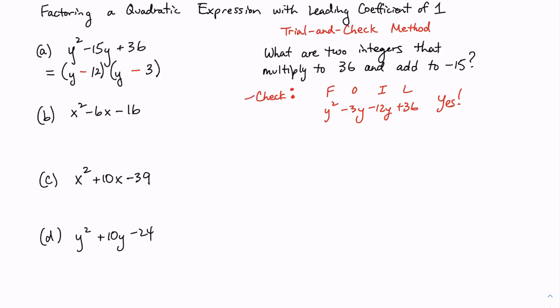When this checks, circle your two factors. So this quadratic expression factors into exactly two binomials. The first binomial is y minus 12. The second binomial is y minus 3. The first factor is y minus 12. The second factor is y minus 3.